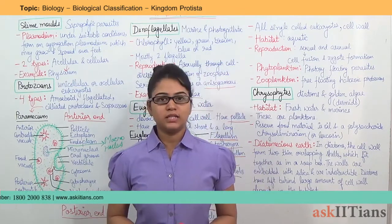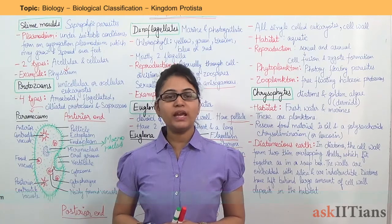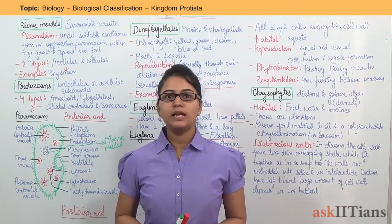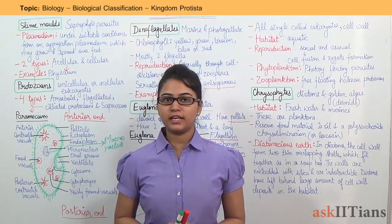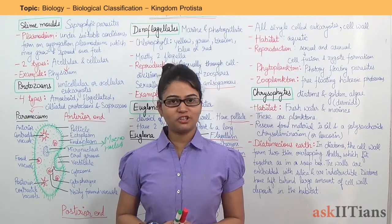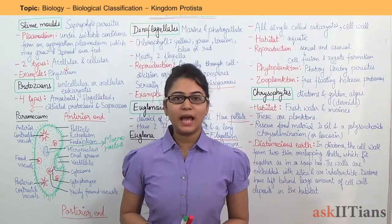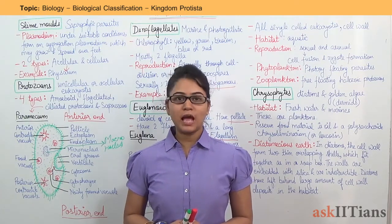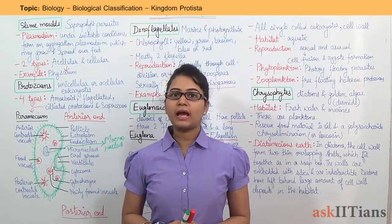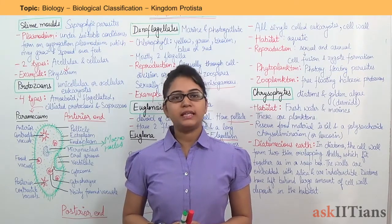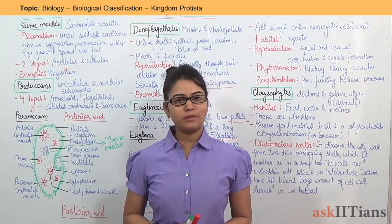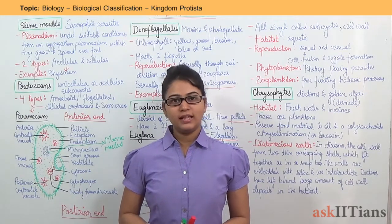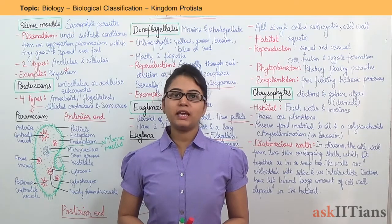This was all about this lecture. We discussed the basic characteristics of Kingdom Protista, a few classifications under Kingdom Protista and their salient features, and we also saw diagrams and examples — including the diagram of paramecium and its parts, as well as Euglena. Thanks for watching — keep tuned.